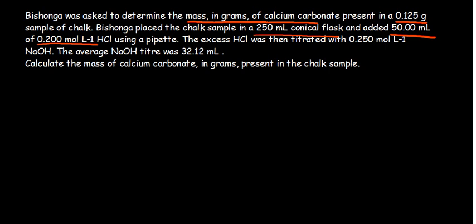In our first reaction, we have calcium carbonate reacting with hydrochloric acid. So that is our first reaction — let's quickly write out the equation. We have HCl reacting with the calcium carbonate which is contained in the chalk.